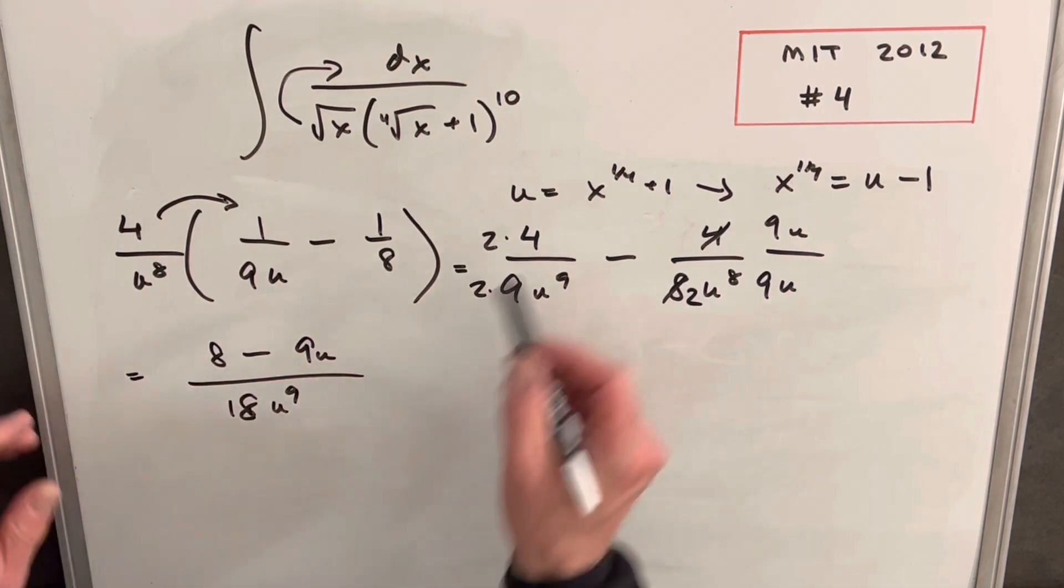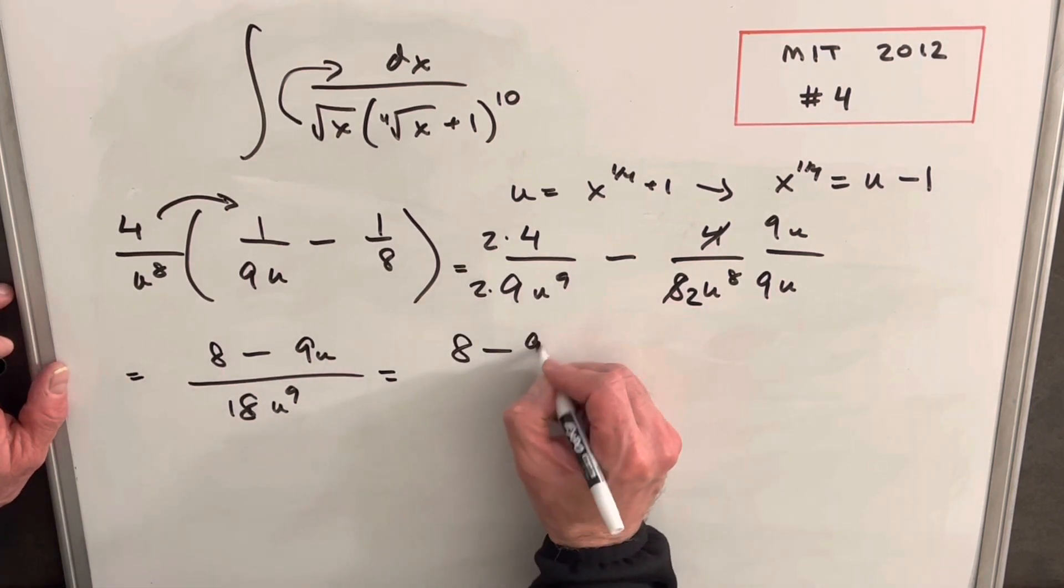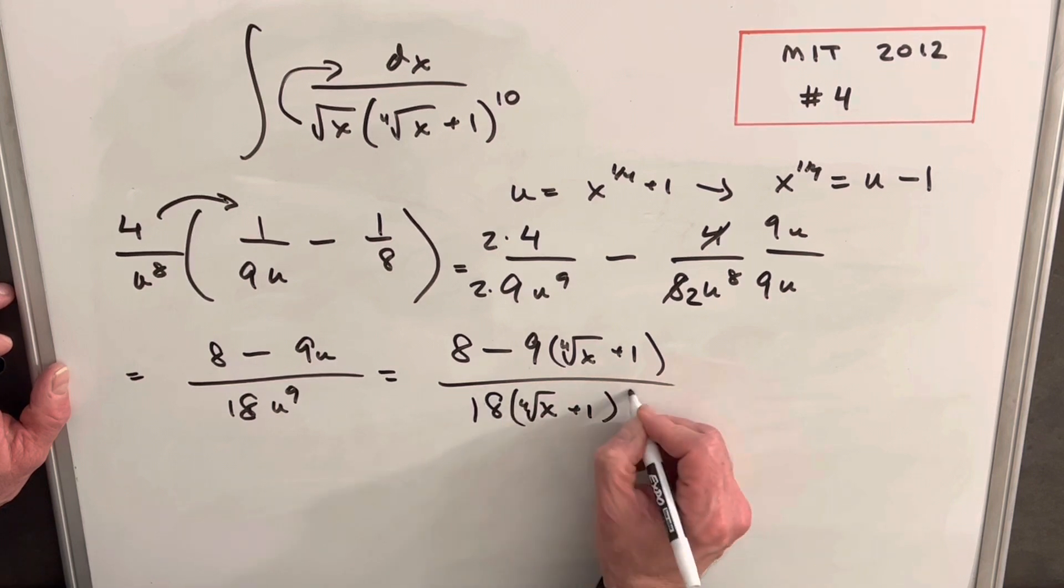And now it's a good place to back substitute. We have our value right here. So let's do our substitution. We'll have eight minus nine times this thing over 18. Same thing. Here's our u. It's going to be fourth root of x plus one to the ninth.